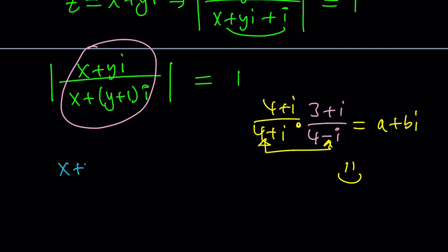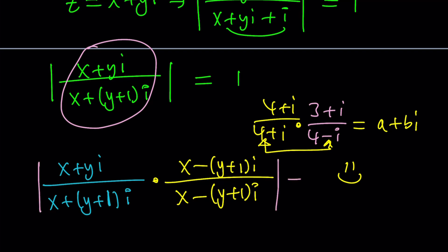We're going to focus on the denominator. We're going to multiply by the conjugate of the denominator. And then we have to absolute value this and set it equal to 1.